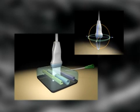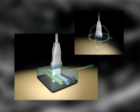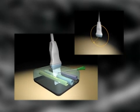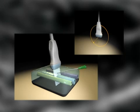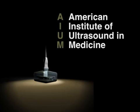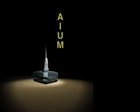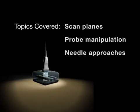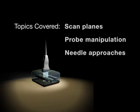When discussing ultrasound guided peripheral nerve block technique, it is useful to describe basic nomenclature for needle and probe manipulation. Much of this is derived from the American Institute of Ultrasound in Medicine standards. We will describe the two basic scan planes, the five probe manipulation maneuvers, and the two needle approaches.